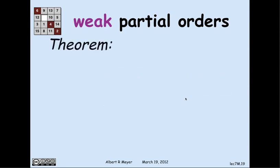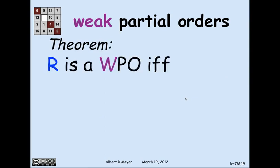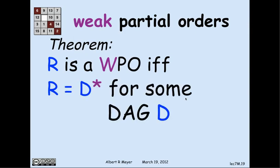Finally, the theorem that summarizes the whole story: r is a weak partial order if and only if r equals the walk relation for some DAG, including length-0 walks.